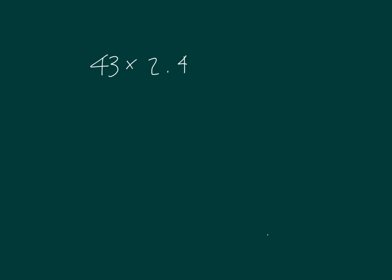Let's round the factors to estimate the product. 43 is close to 40. 2.4 tenths is close to 2. So our estimate is 40 times 2, which is 80. Since we rounded both of these numbers down, our estimate will actually be lower than our actual answer.